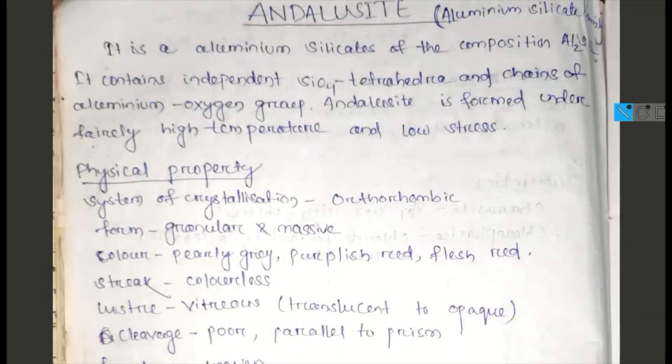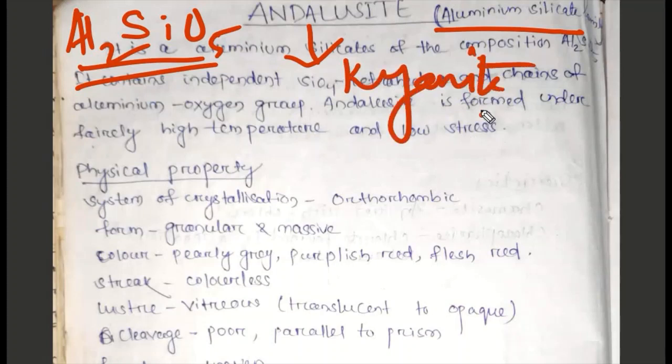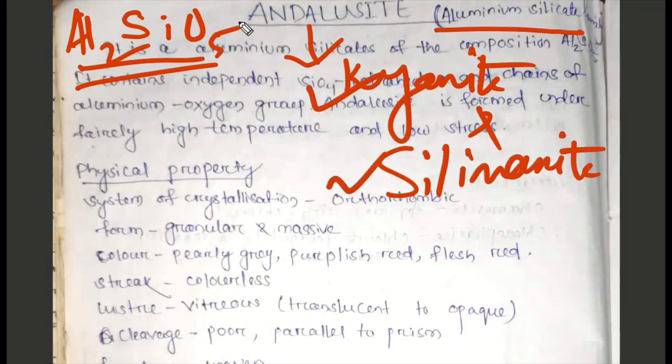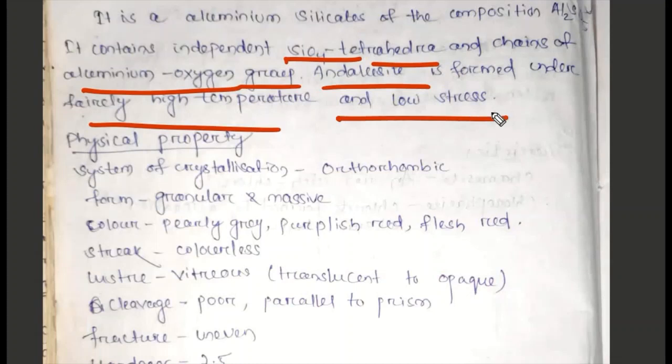We will talk about andalusite. Andalusite is aluminum silicate with composition Al2SiO5. This is the three mineral composition of Al2SiO5 in the aluminum silicate family. It contains independent SiO4 tetrahedra and chains of aluminum oxygen group. Andalusite is formed under fairly high temperature and low stress.